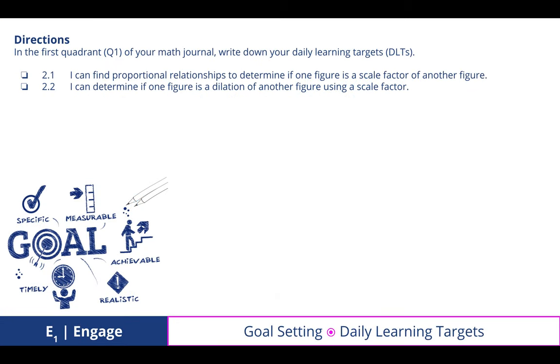In the first quadrant of your math journal write down your daily learning targets. 2.1: I can find proportional relationships to determine if one figure is a scale factor of another figure. 2.2: I can determine if one figure is a dilation of another figure using a scale factor.